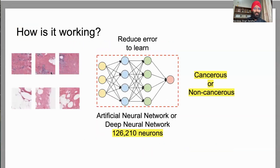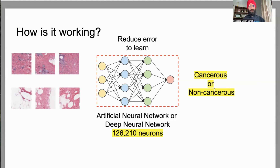So how does it work? These images are given as input to the AI model, which will be trained to reduce error — error being how many mistakes the AI is making. This is a very powerful neural network with around 126,000 neurons. This AI network outputs whether the patient has cancer or not. We want to do this because doctor resources are limited, and such an AI can help so many patients in vast corners around the world. I'll show you how you can develop these systems in less than 10 minutes if you have access to the datasets.